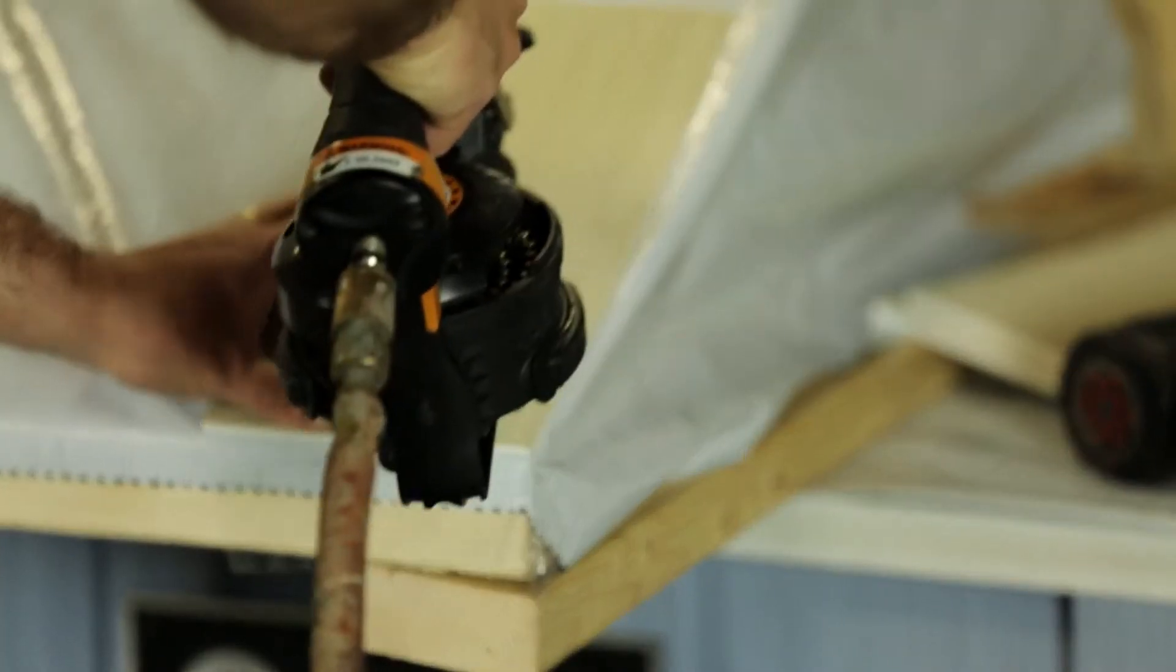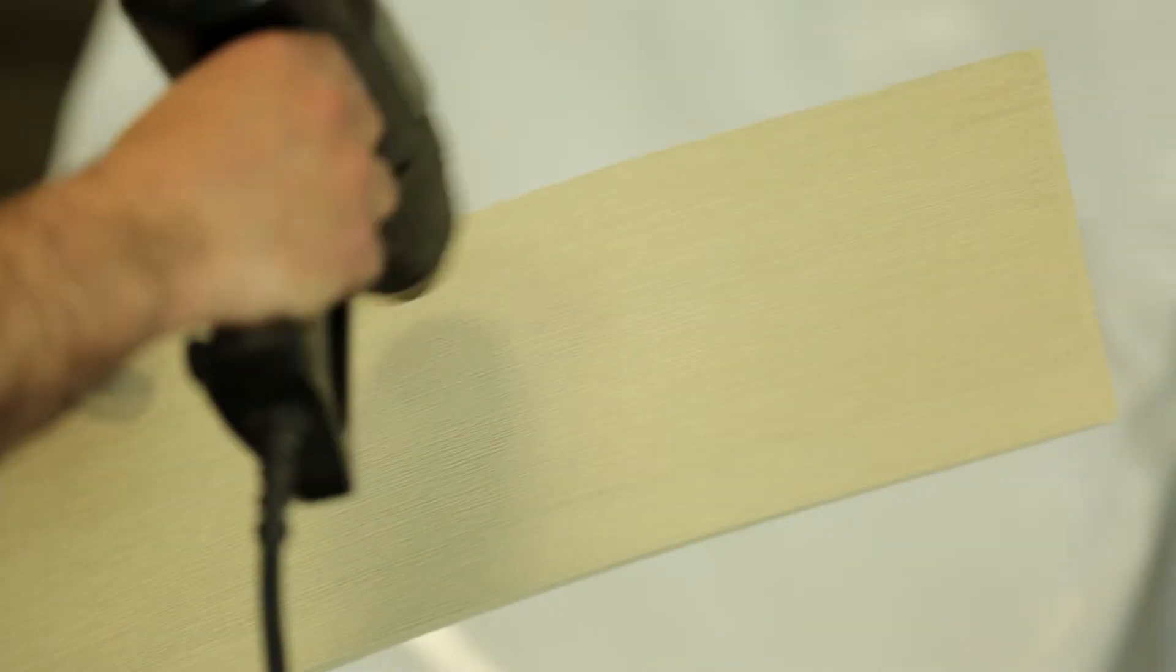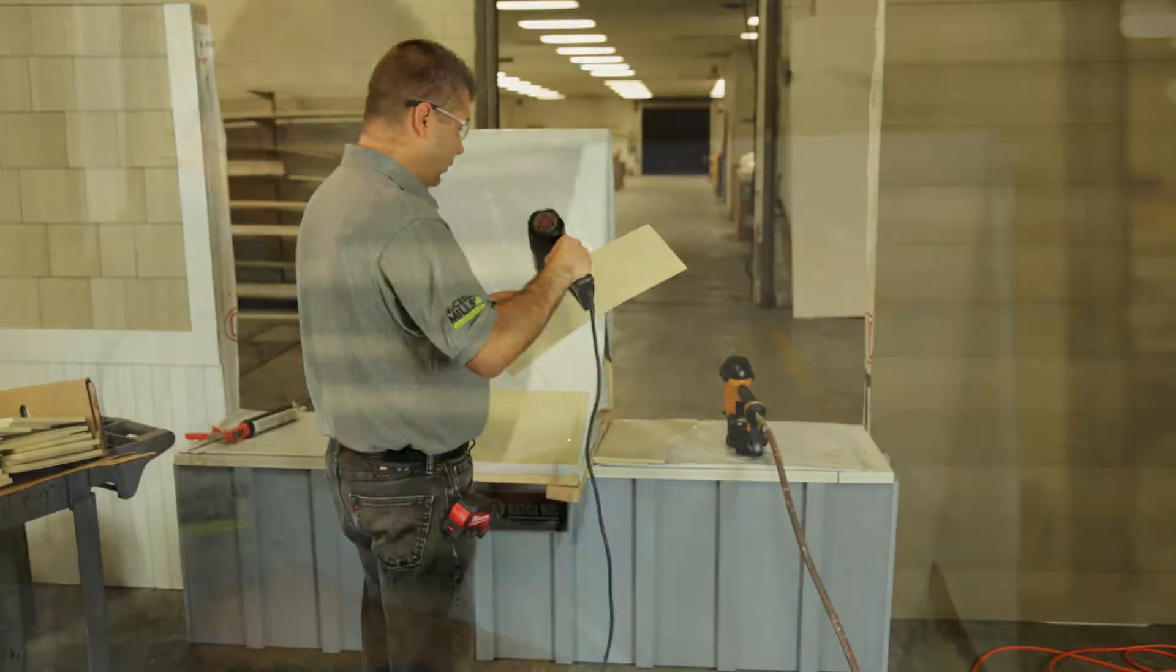For your starter course it can be done the same way as you would at the bottom of your home. Your shingles are already flexible, however you may want to add heat to give it the desired curve that you need for your flare.